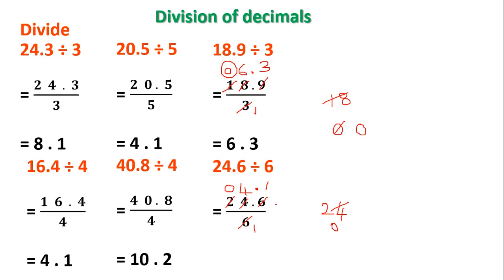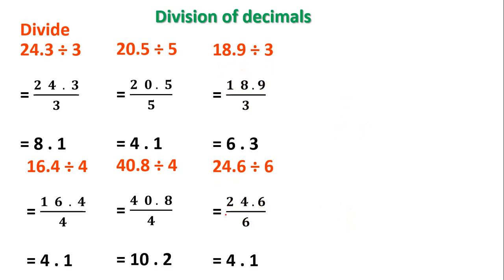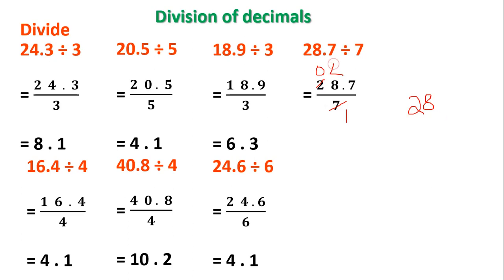The quotient is 04.1; the leading 0 has no value, so I write only 4.1. Let's take more problems. Divide 28.7 by 7. Write the dividend in the numerator and the divisor in the denominator. 7 ones are 7; 7 zeros are 0; 2 minus 0, remainder is 2. Join the next digit 8; number becomes 28. 7 fours are 28; 28 minus 28, remainder is 0. Place the decimal point in the quotient; 7 ones are 7. The quotient is 04.1, so the answer is 4.1.